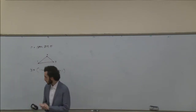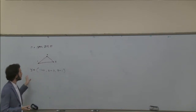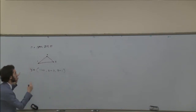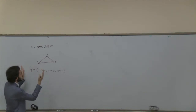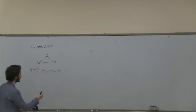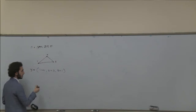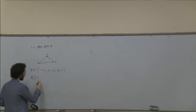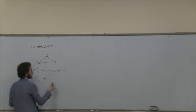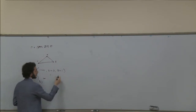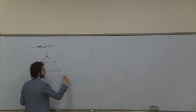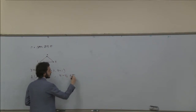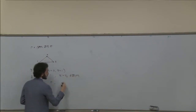Now I need to define what an adjacency matrix is. How can we define the graph numerically? We take a transformation A of gamma, where gamma is the graph, and every element ij of that matrix is defined as one if vertex i and vertex j are connected in the graph, and zero otherwise.